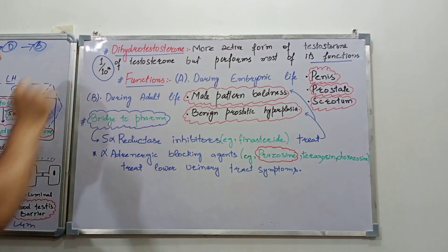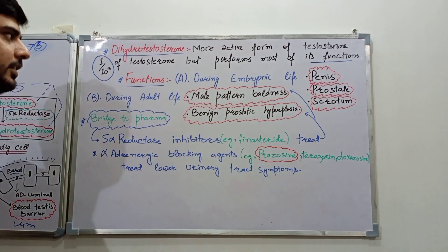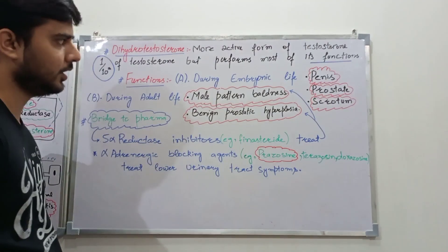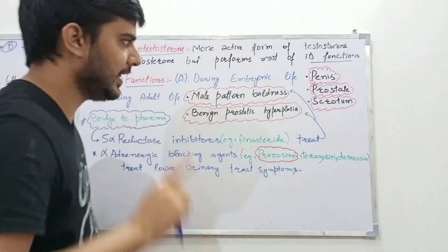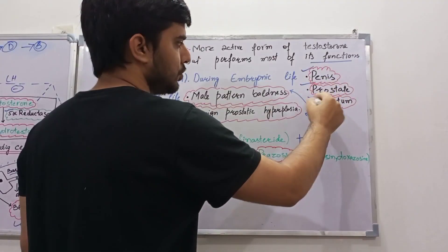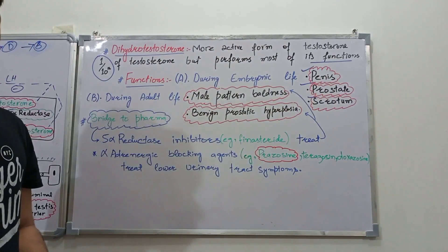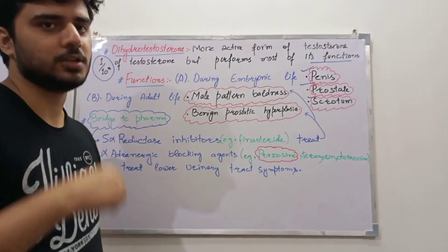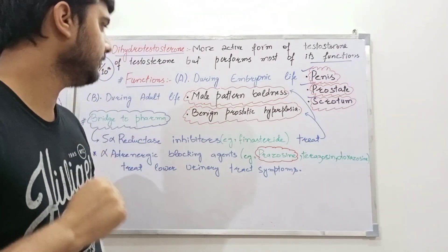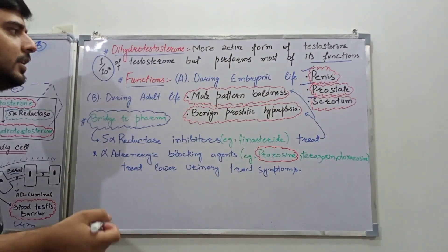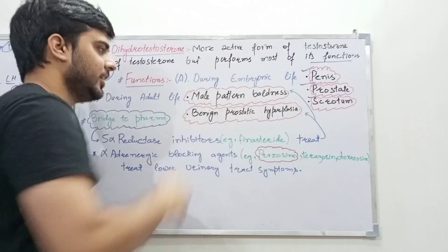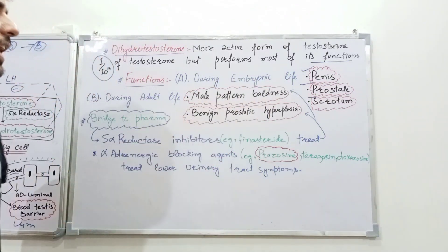The functions of dihydrotestosterone vary in embryonic life and adult life. During embryonic life it helps in the development of the penis, prostate, and scrotum. During adult life it leads to two conditions: one being male pattern baldness, and the other being benign prostatic hyperplasia.